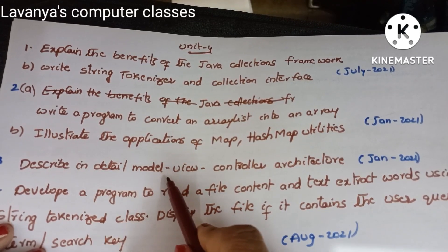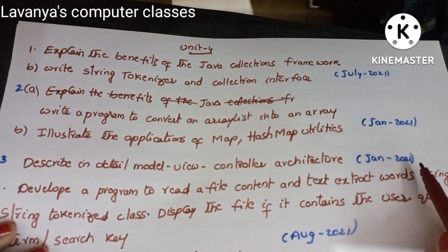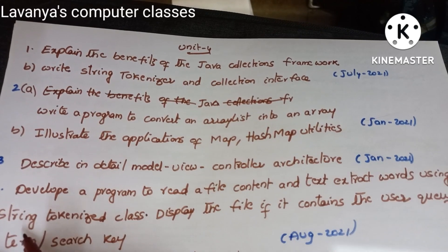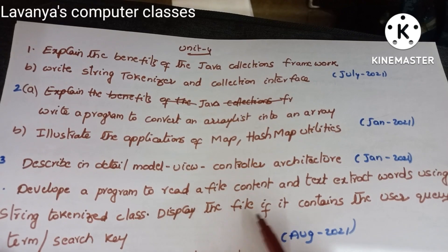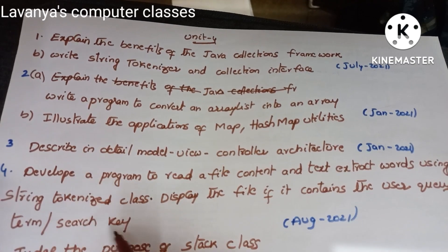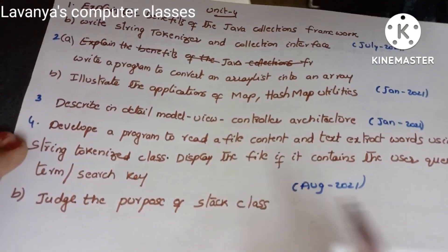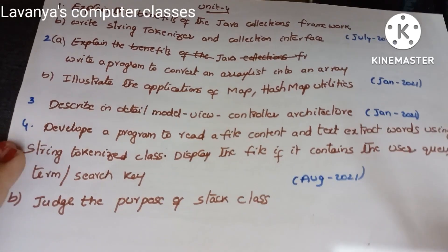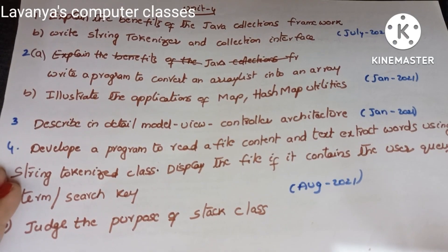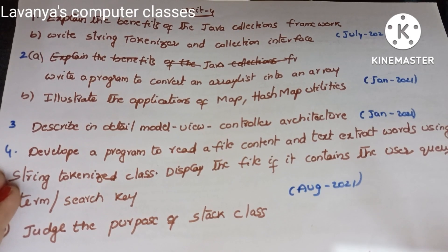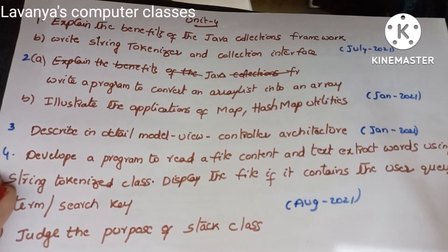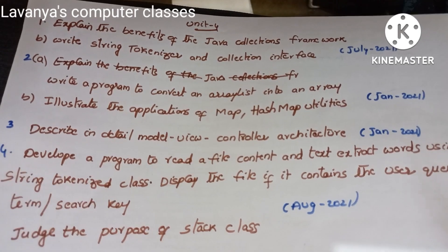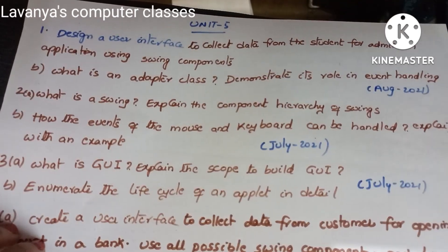'Describe in detail the Model-View-Controller architecture' — July 2021. 'Develop a program to read file content, extract words using StringTokenizer class, and display the file if it contains user query terms' — August 2021. 'Judge the purpose of the Stack class' — August 2021. In the corona pattern, units one, two, and three had about two questions each, while units four and five had fewer questions.